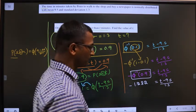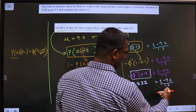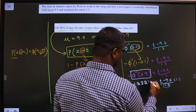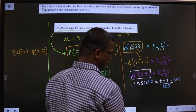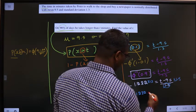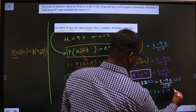Okay. Now, to get T, first I should get rid of 1.3. For that, multiply by 1.3 on both sides. So, this gets cancelled. Now, we are left with minus 1.282 into 1.3 equal to T minus 9.5.